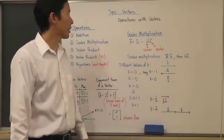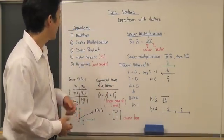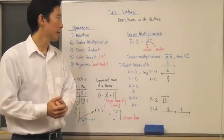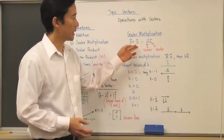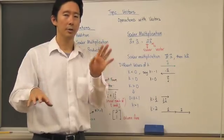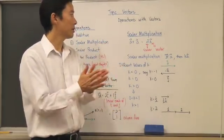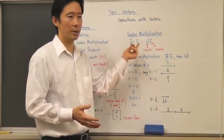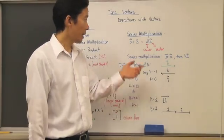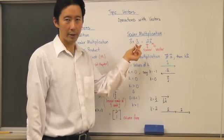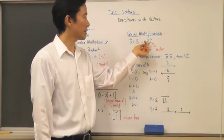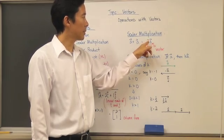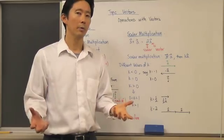Let's continue our discussion of operations with vectors. We finished addition, and now we're going to look at scalar multiplication. Let's take a simple example: two vectors that are exactly the same, vector a and vector a. Adding them algebraically gives x plus x, which is 2x. We can do the same with vectors — a plus a equals 2a, where the 2 is the scalar being multiplied to vector a. That's why we call it scalar multiplication.